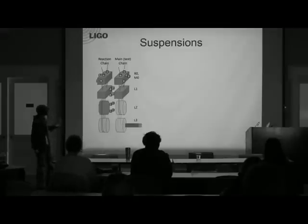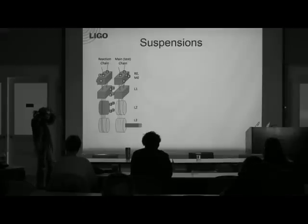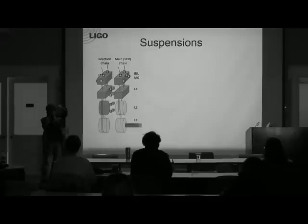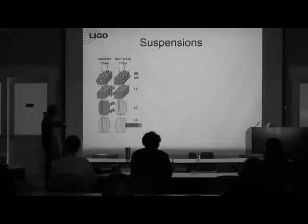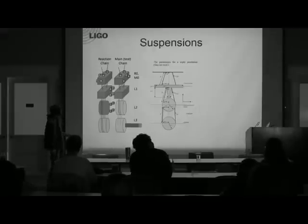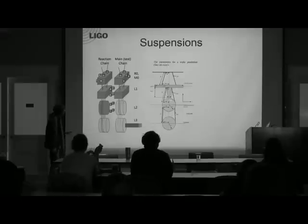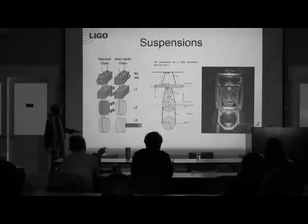This is the quadruple suspension. You have four stages of isolation. This is a single pendulum, this is a two-stage double pendulum, and then basically four — it's just four of these stacked. It isolates the noise from the ground by a factor of one over frequency to the eighth power. This is the layout for a triple suspension — only three stages of isolation. And this is what it actually looks like in the chamber.